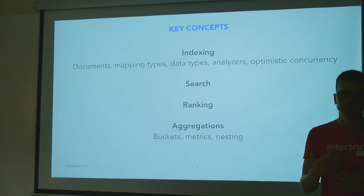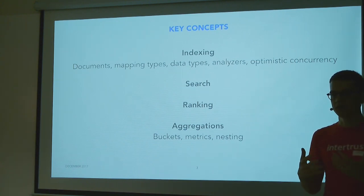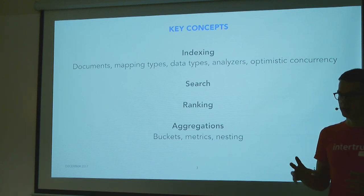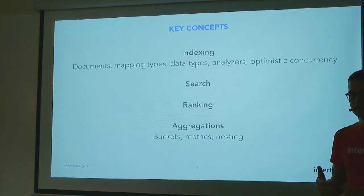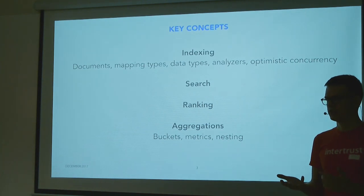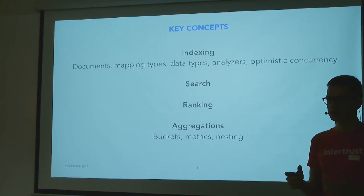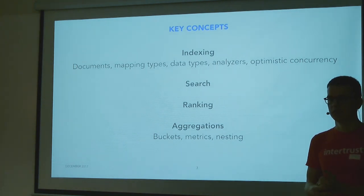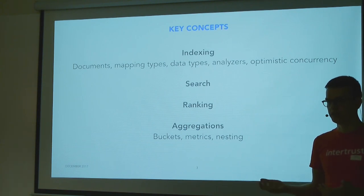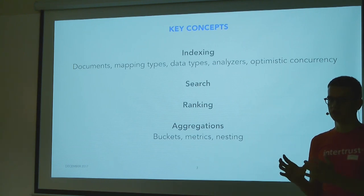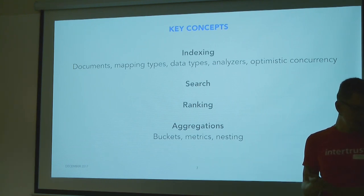Data types are what mapping types are made of. You have strings and numerics as usual, some geometry data types for points and more complex structures like polygons or rectangles, dates, date ranges, integer ranges, and IP addresses, which Elasticsearch makes sense of for searching. So there's quite a wide variety.